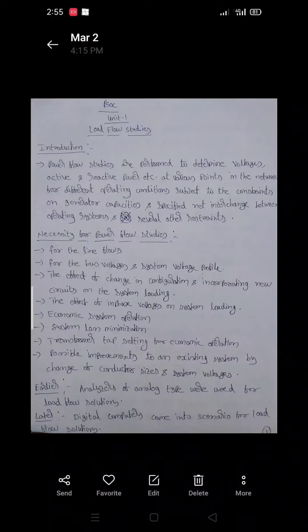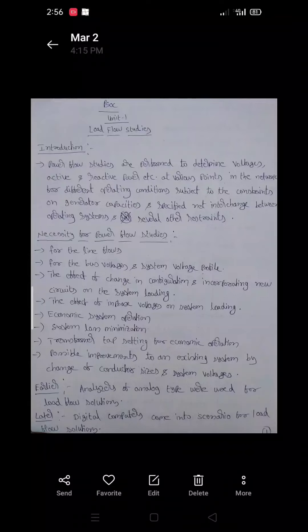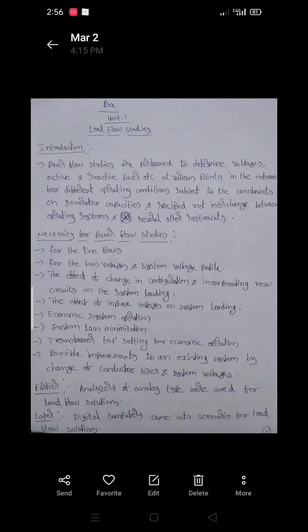The entire Power System Operation and Control subject is divided into two subjects. One is Power System Operation and Control, and another is Power System Analysis. The second and third units are related to operation and control of power systems, while the remaining three units are related to power system analysis, which we called Computer Methods in Power Systems (CMPS).